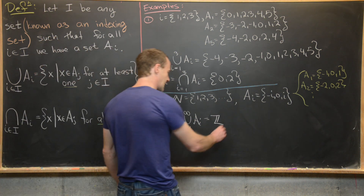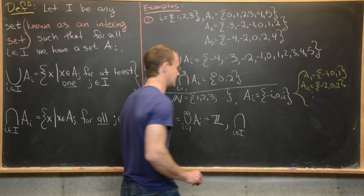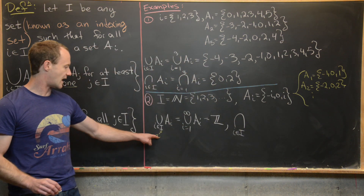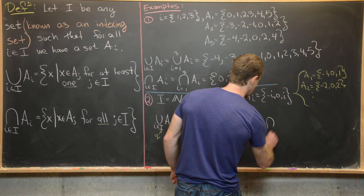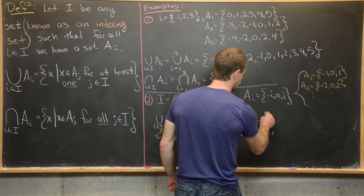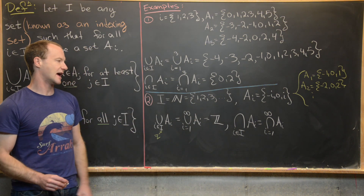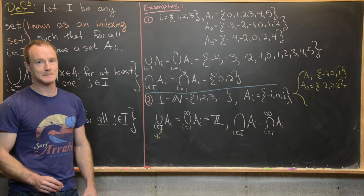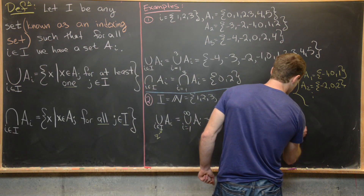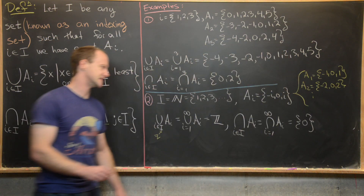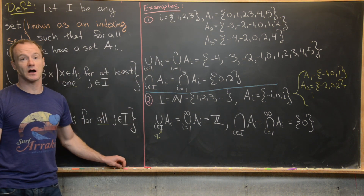Next, let's look at the intersection over all i in the indexing set — or all i in the natural numbers — of A_i. We can write that as the intersection as i goes from 1 to infinity of A_i. We want a shared element from all of these sets. There's only one shared element: the number 0. So we get the singleton {0} when we take this intersection.